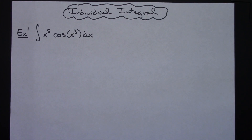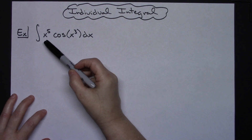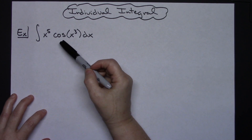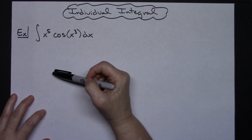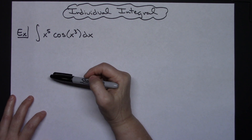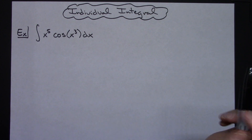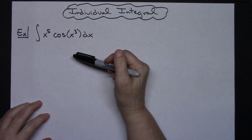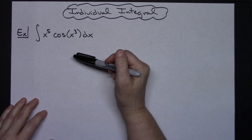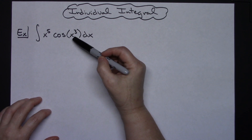In this video we're going to take a look at an individual integral. We're going to look at integrating x to the fifth times cosine x to the third dx. The trick here is looking ahead and seeing what you're going to need to do. We're going to try to do a u-substitution to begin with, followed by an integration by parts.